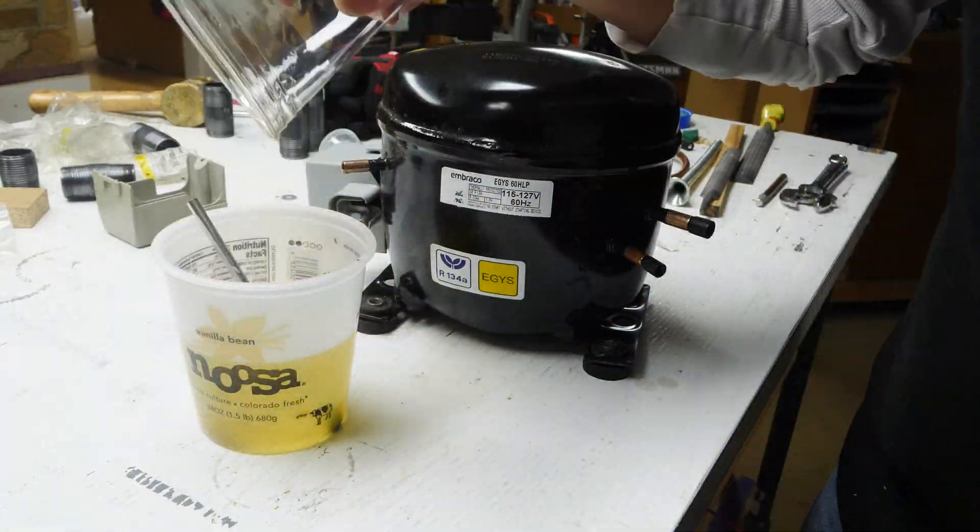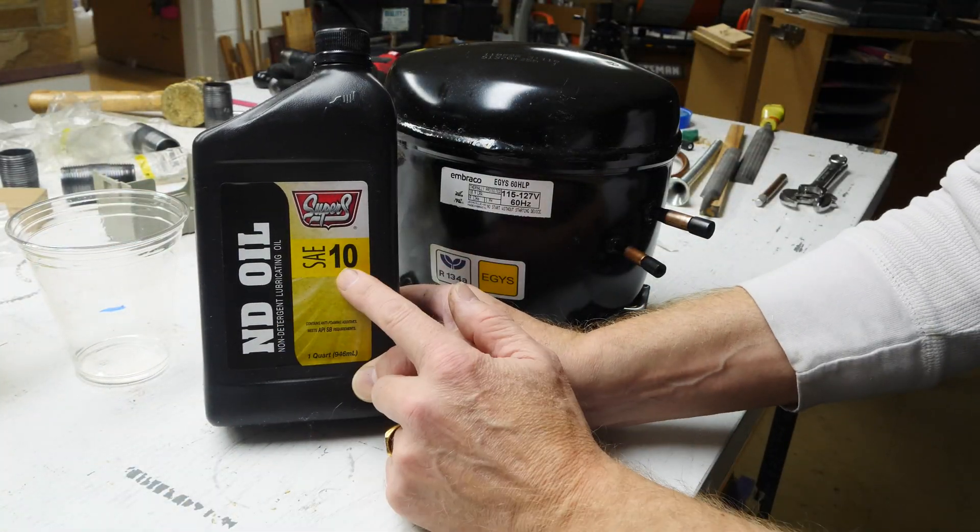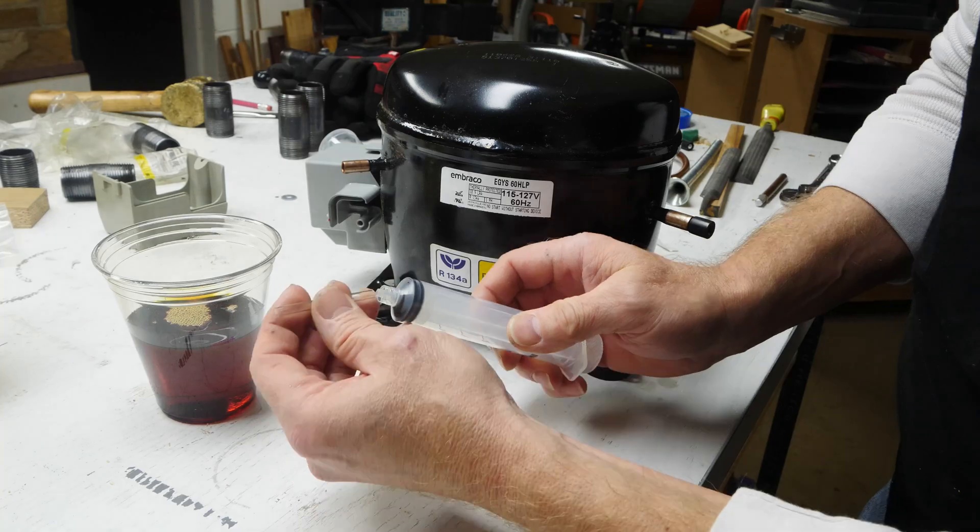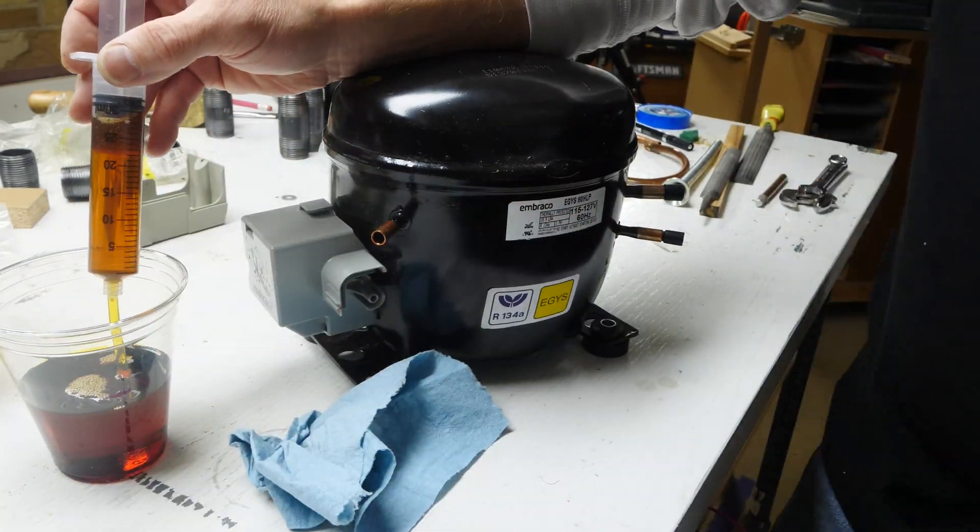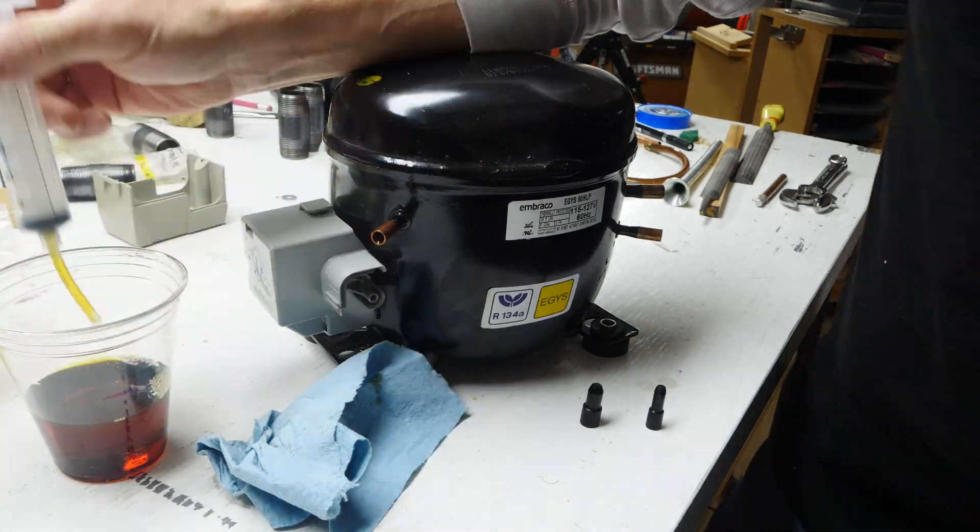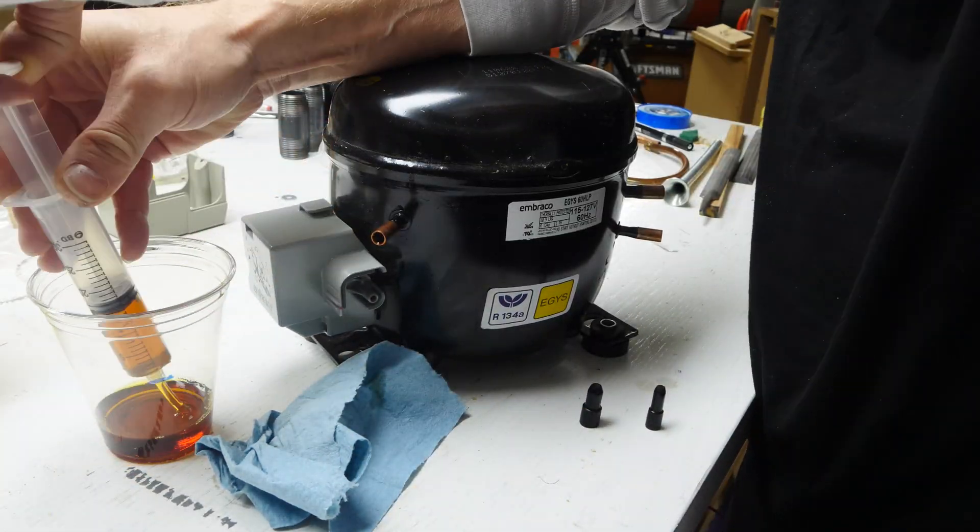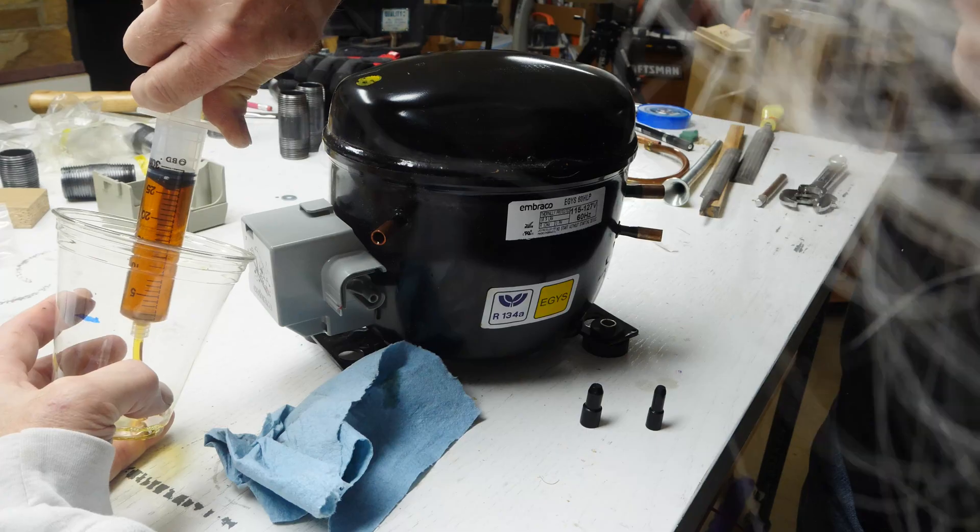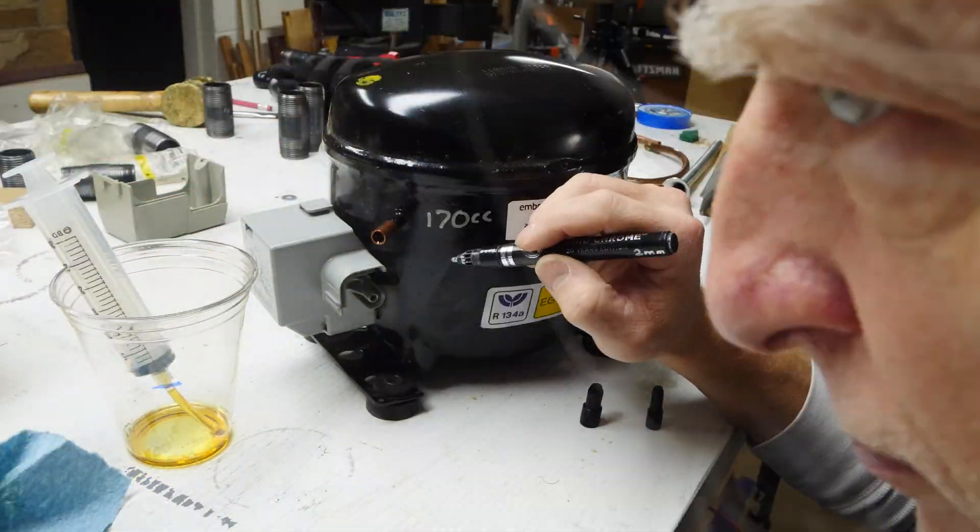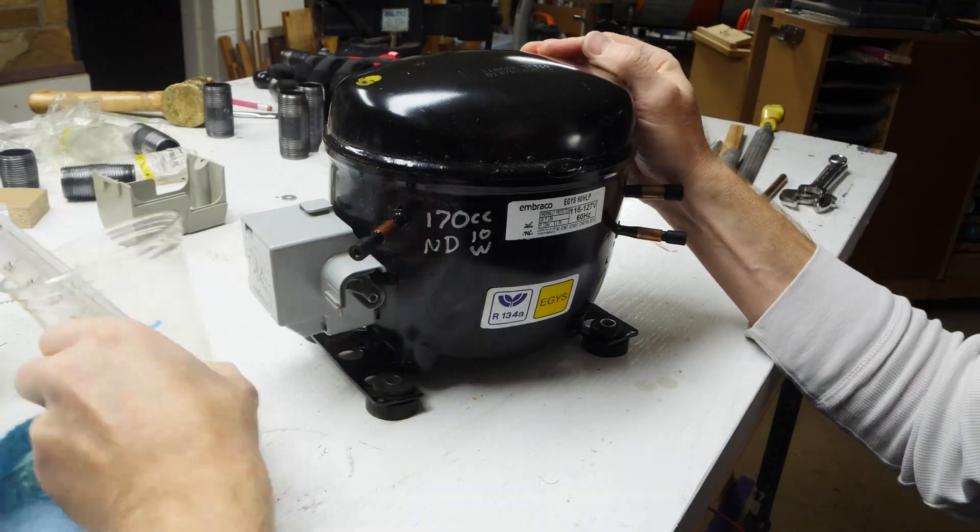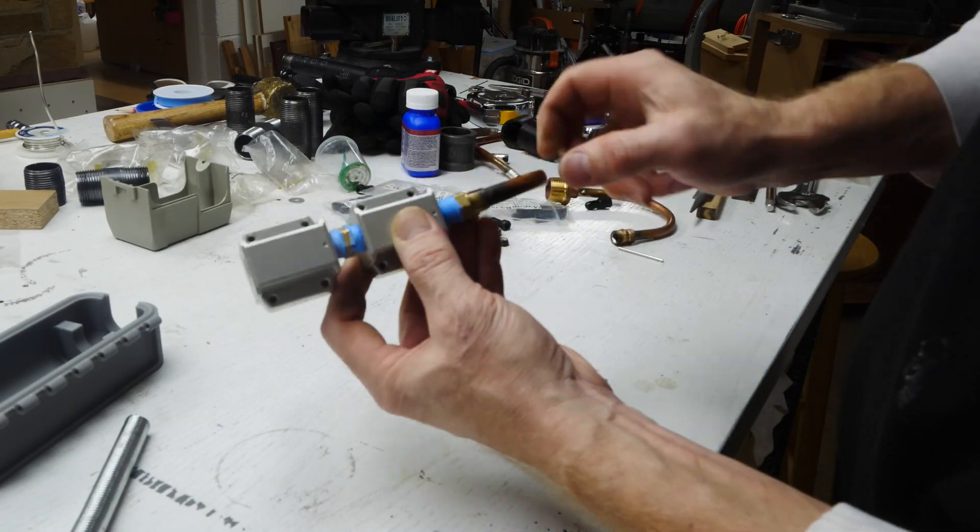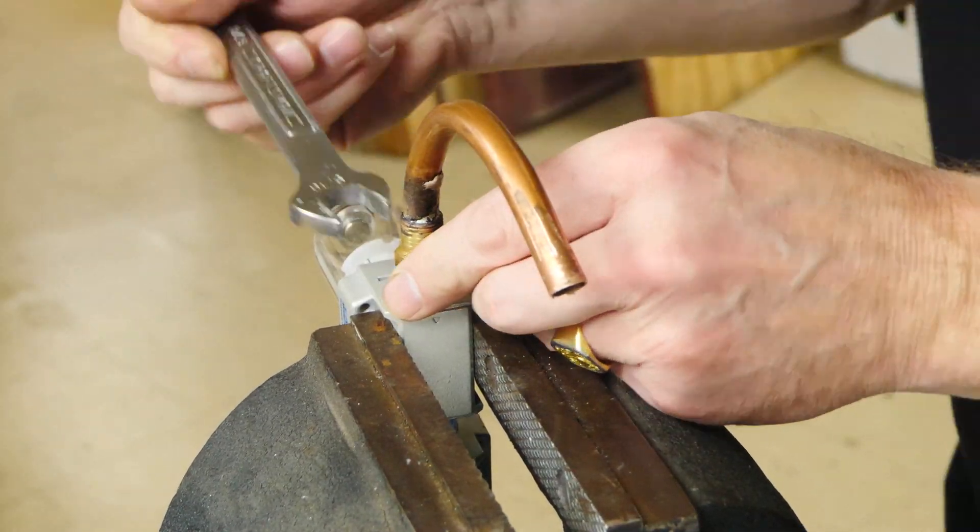You want to use a non-detergent oil and this is a 10 weight. I basically put in as much as I took out and I use a syringe to put that in. Since there's no filter in this system, non-detergent allows the particles and dirt to settle to the bottom. If it was detergent it would keep it all floated and you would have a filter that would filter out all the particulates, but we don't have that in this system so you want a non-detergent oil.